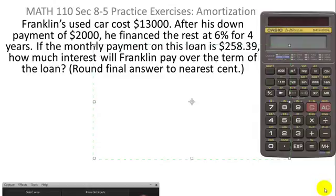Franklin's used car costs $13,000. After his down payment of $2,000, he financed the rest at 6% for four years. If the monthly payment on this loan is $258.39, how much interest will Franklin pay over the term of the loan? And we want to round our final answer to the nearest cent.